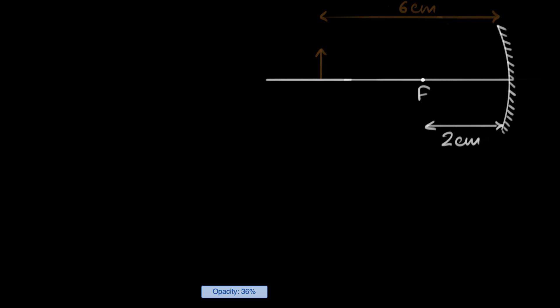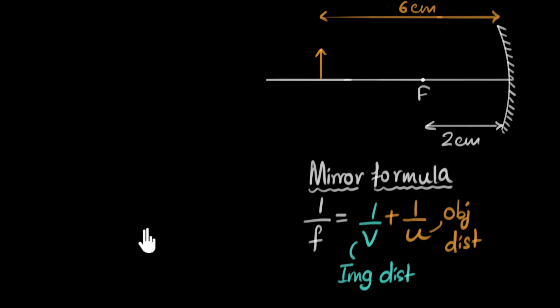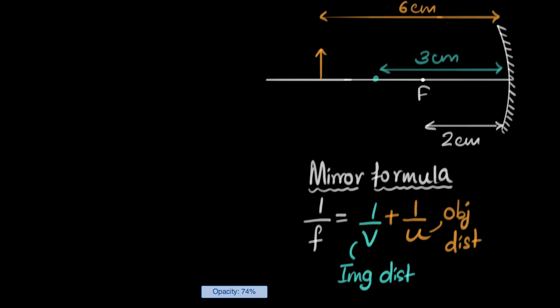In a previous video, we took a concave mirror of focal length two centimeters and kept an object six centimeters in front of it. We asked ourselves where its image would be, and using the mirror formula — which connects image distance and object distance with focal length — we figured out that the image would be three centimeters in front of the mirror. In this video, we want to figure out the size of this image and whether it's a real image or a virtual image.